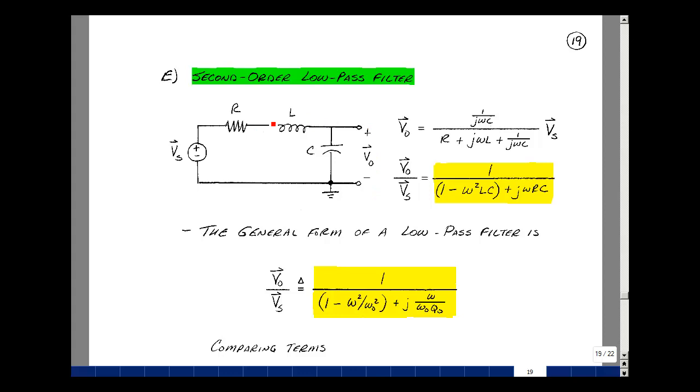As the frequency increases, j omega L gets larger and larger. When you have elements in series, the largest impedance gets the most voltage across it. So the current that's flowing in this inductor is going to be roughly V sub s divided by j omega L as the frequency goes up.